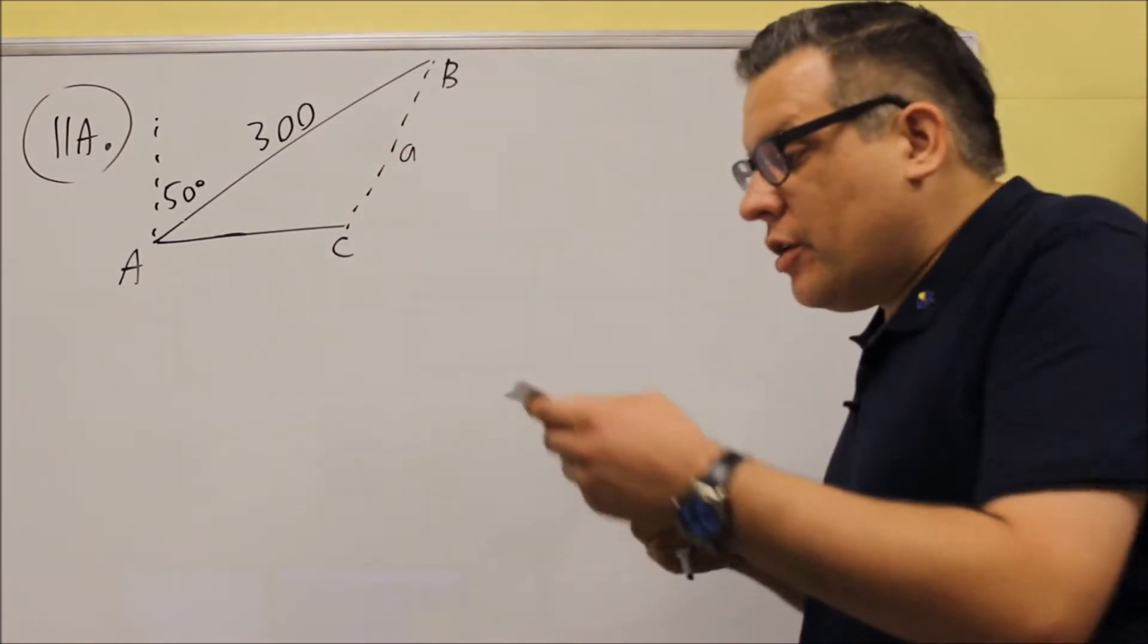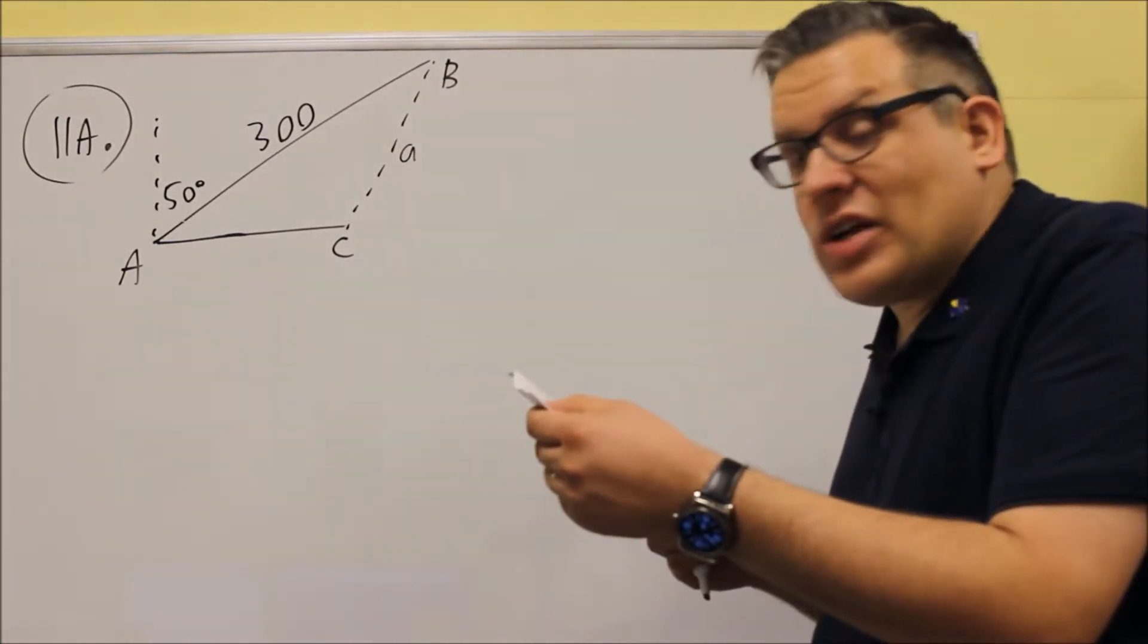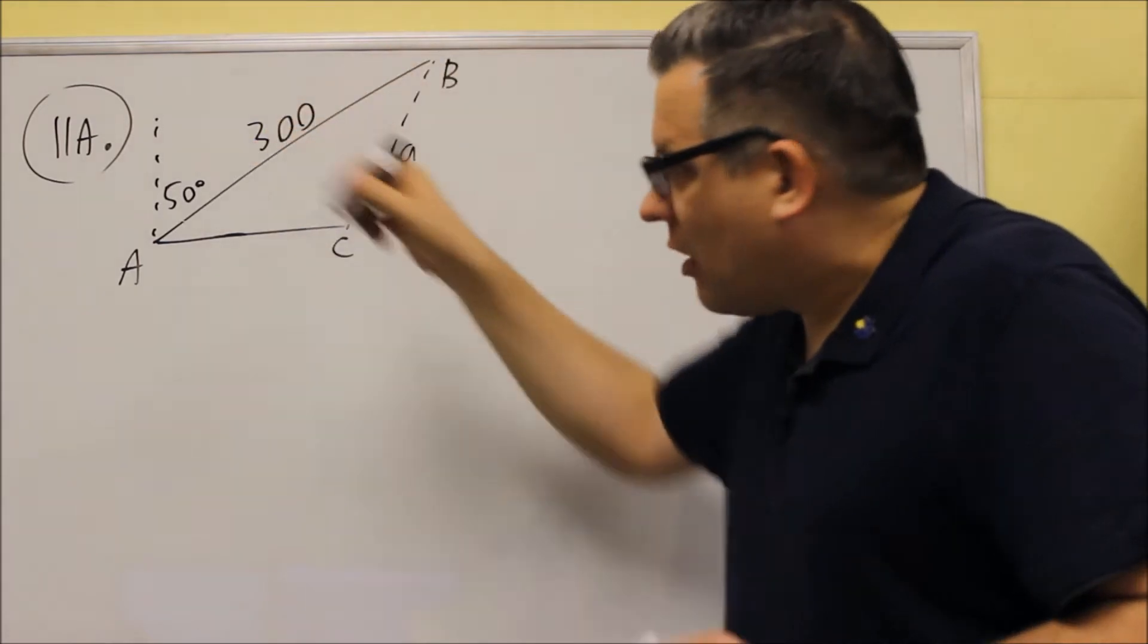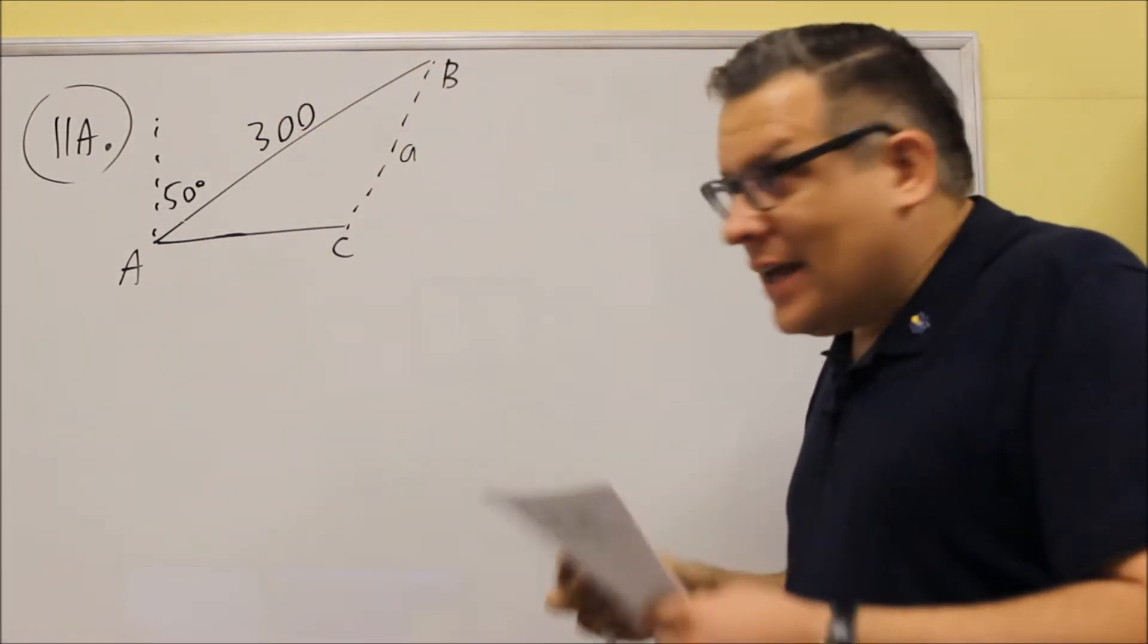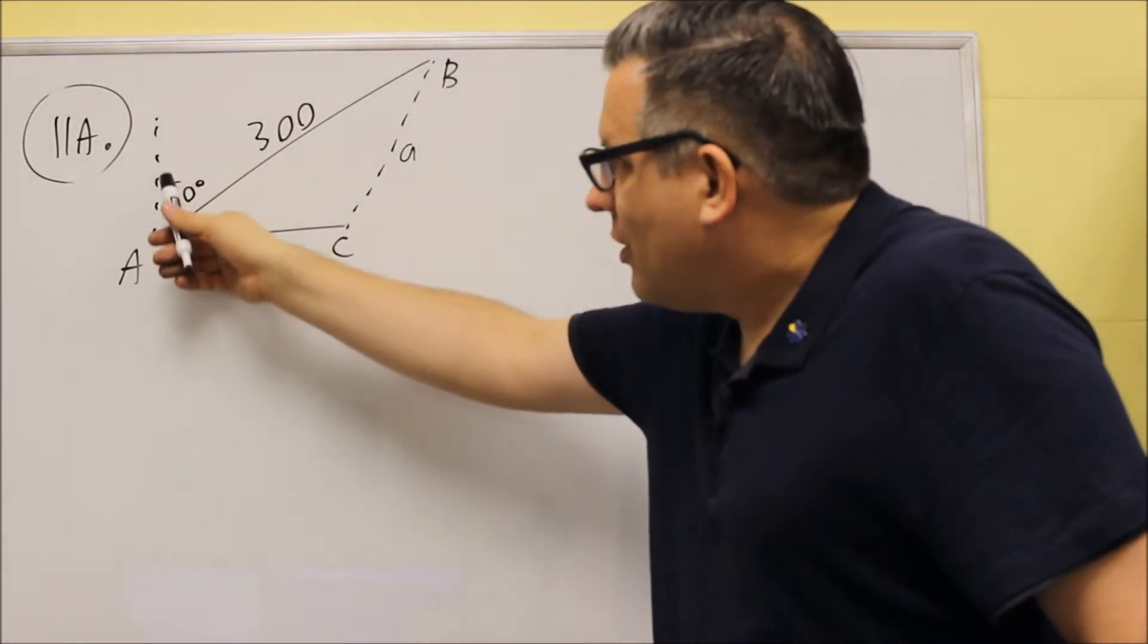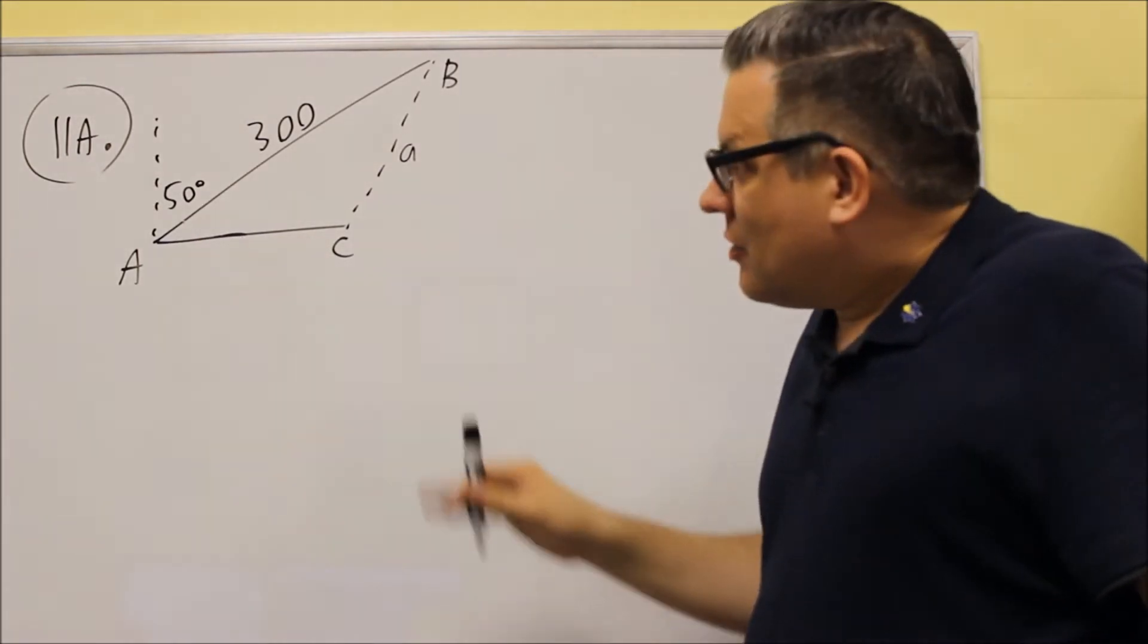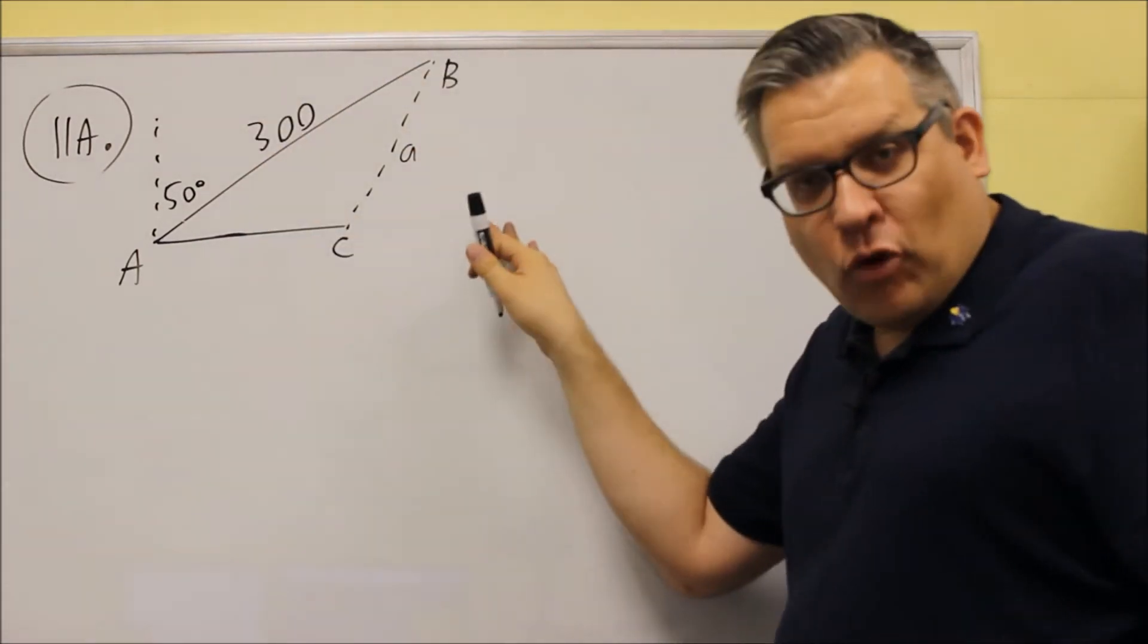A diagram is given. Let me read off of the sample test. It says airport B is 300 miles from airport A and it's at a bearing of north 50 degrees east.